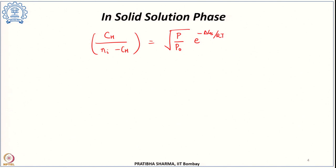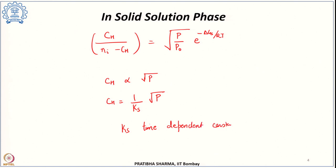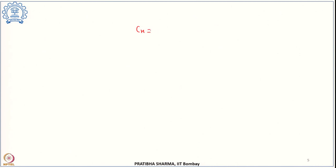This expression shows that in the low concentration region, the concentration is proportional to the square root of pressure — which is Sievert's law. Sievert's law states that the amount of hydrogen dissolved into the metal phase is proportional to the square root of the applied pressure: C_H = (1/K_s)·√P, where K_s is a temperature-dependent constant. Therefore, Sievert's law relates hydrogen concentration to pressure as C_H = (1/K_s)·√P, and this relationship holds under low concentration conditions.